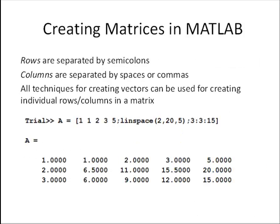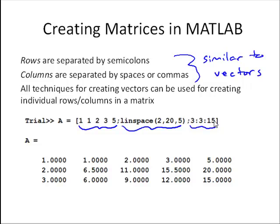Let's talk about creating matrices in MATLAB. Rows are separated by semicolons. Columns are separated by spaces or commas, similar to vectors. All the techniques that we use for creating vectors can be used to create individual rows or columns in a matrix. Here's an example where the first row of A is created by entering numbers separated by spaces. The second row is created by the linspace command to create five evenly spaced elements between 2 and 20. And the third row is created with the colon operator starting with 3, incrementing by 3, and ending at 15.